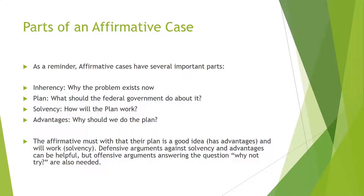As a reminder, affirmative cases have several important pieces: the inherency, which describes the problem and how it exists now; the plan, which is what the federal government should do about it; the solvency, which is how the plan will work; and the advantages, why we should do the plan. The affirmative has to win that their plan is a good idea, which means having advantages and that it will work in order to win the debate. Defensive arguments against solvency and advantages can be helpful, but offensive arguments answering the question 'why not try' are also necessary for the negative to win.